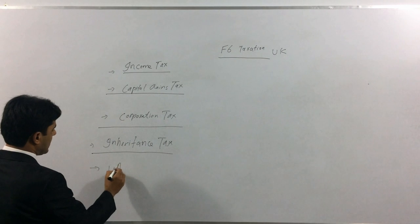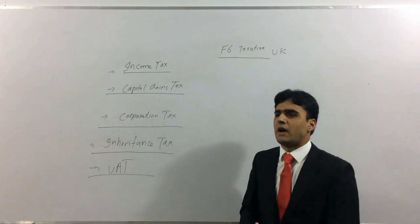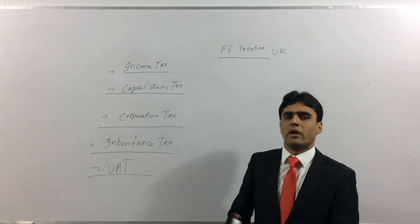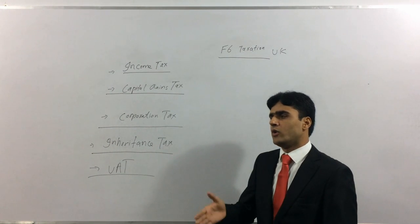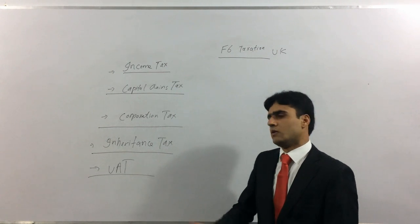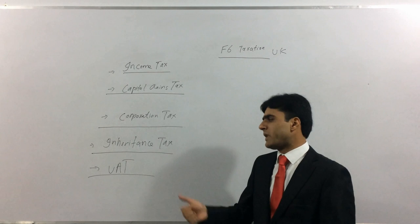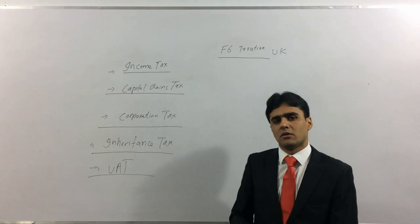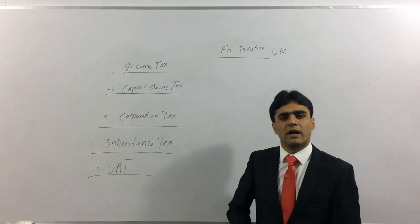The last major topic is value added tax, or VAT. VAT is simply a tax you pay when you buy something, and when businesses sell something they must charge it. For example, when you fill your car with fuel at a petrol pump and pay at the counter, check your receipt — you will have paid some VAT on top of the fuel cost. VAT can sometimes be exempt depending on the goods, and businesses themselves may be exempt from charging it. We will cover all of this when we reach the VAT topic.